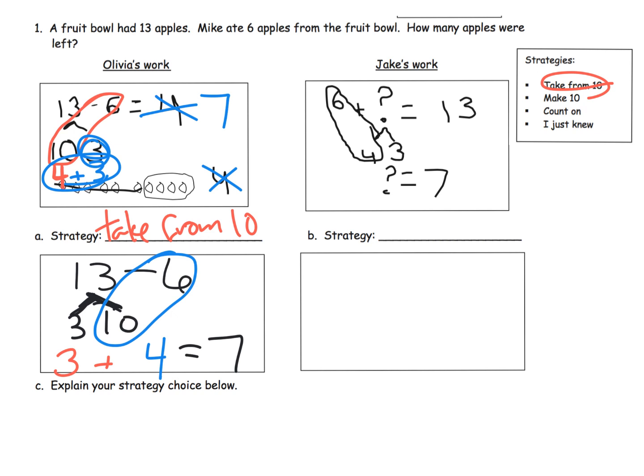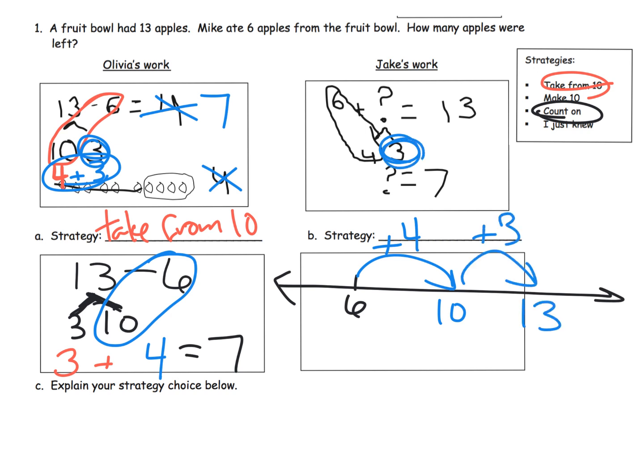Jake is a little bit trickier. His is the count on method because I'm going to show you kind of like the number line. We see that Jake starts at 6 and adds 4 to get to 10, and then he adds the remaining 3 to get to 13 because our goal is to get to 13, since our problem is 13 minus 6. So that's basically saying, if you're going to start at 6, what do you need to add to it to get to 13?